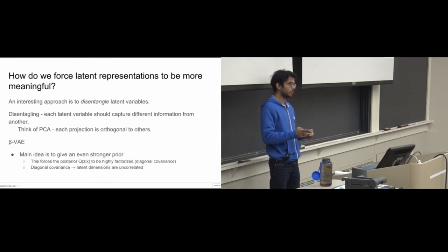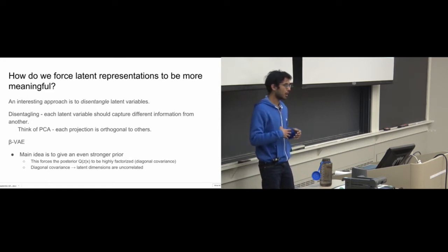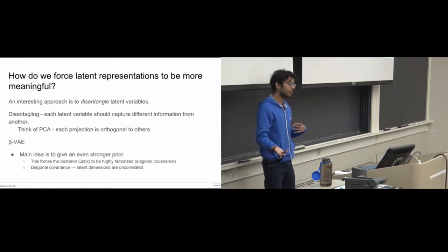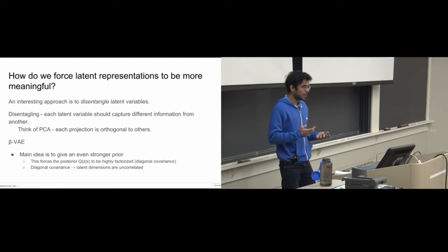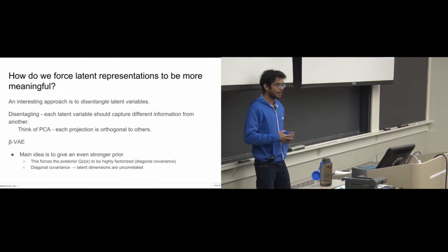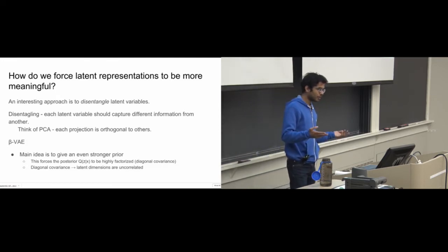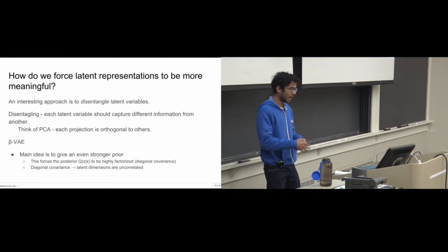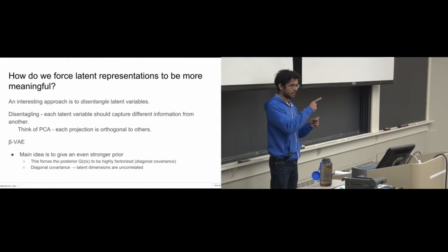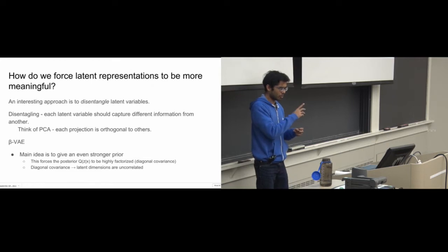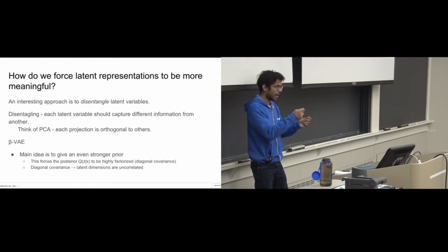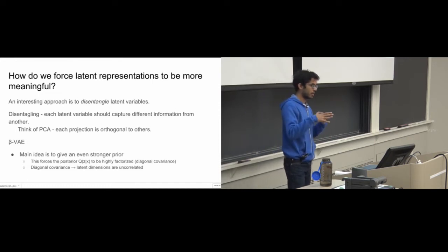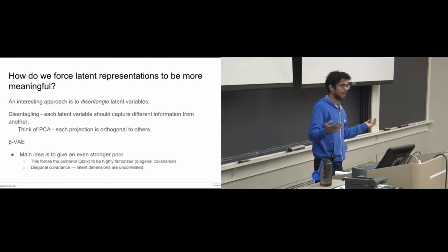The main idea in the beta-VAE paper is that you just scale the KL divergence term a lot more — they use a beta value of 250. This forces the posterior q(z|x) to be very highly factorized, because you're saying your prior has a diagonal covariance matrix and incorporating that strongly forces the posterior to also be highly factorized. The covariance terms outside the diagonal are very close to zero, meaning the latent dimensions are more or less uncorrelated — this gives interesting disentanglement results. I'll add a link to that paper on the slide.